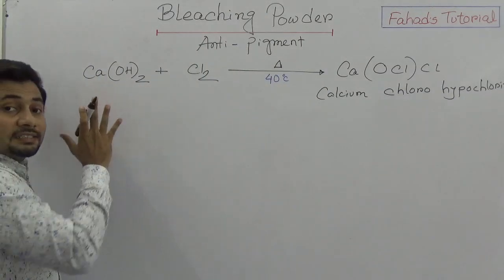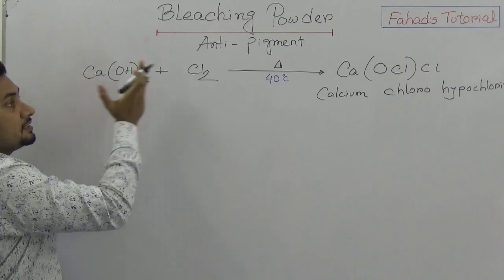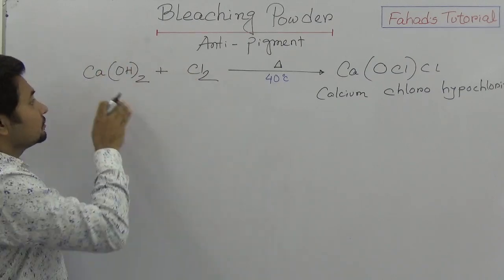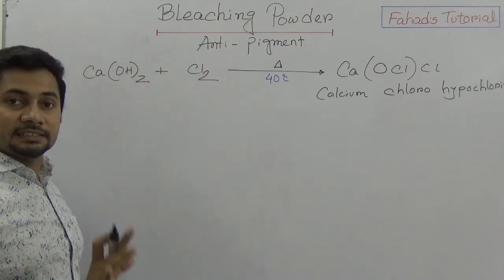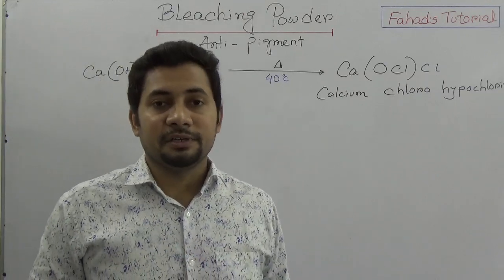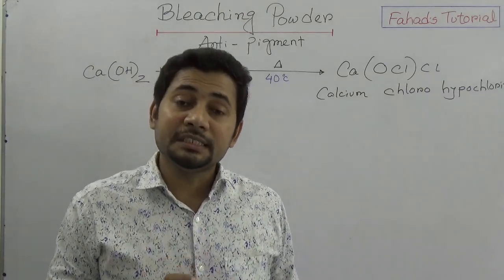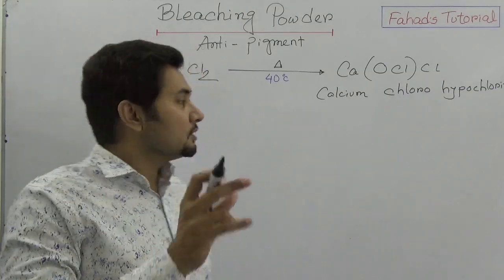What is the preparation? When chlorine gas is channeled through lime water at 40 degrees Celsius, it produces bleaching powder. Now the question is: how does it cleanse?